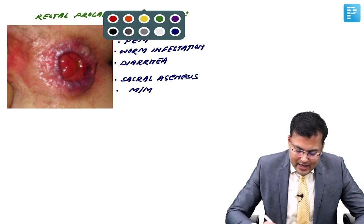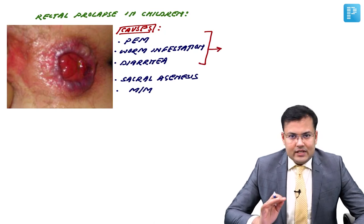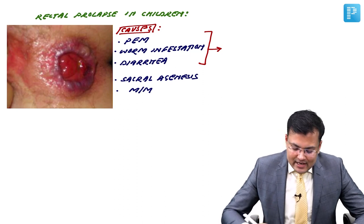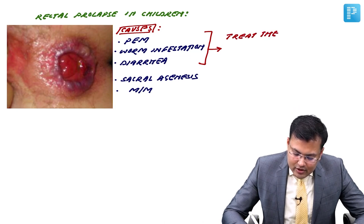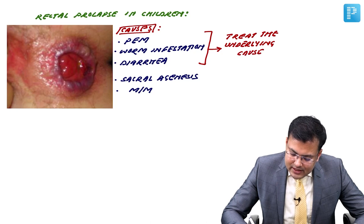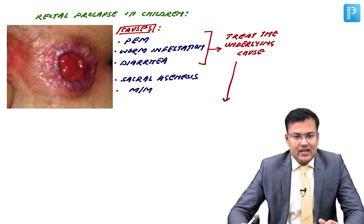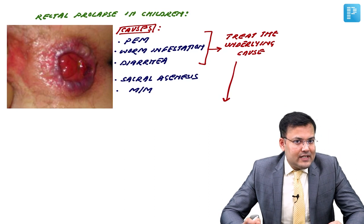How we are going to manage? In majority of cases, conservative management is sufficient. If it is because of protein energy malnutrition, worm infestation, or diarrhea — treat the underlying cause. Most patients improve. Imagine if it still persists even after treating the underlying cause. In that case, we have to go for rectopexy — fixation of rectum.